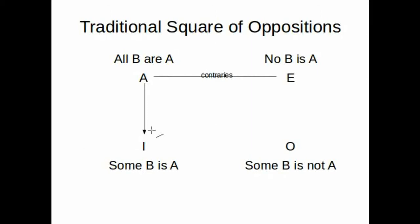Next relation is between A and O. So, the relationship between A and O is called contradictory relationship. So, O is the contradictory of A. They contradict each other. What does it mean? If A is true, O must be false.